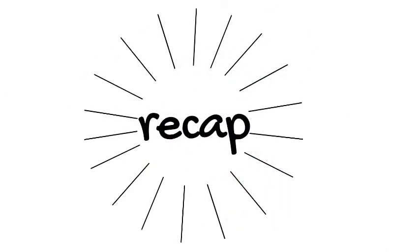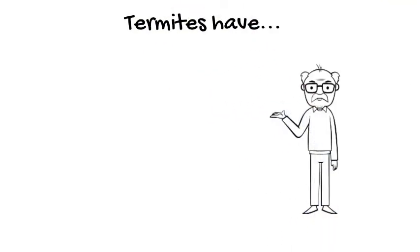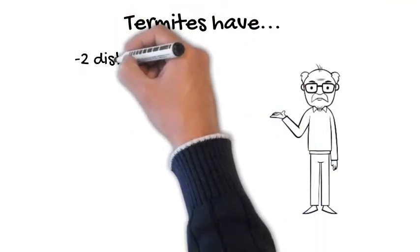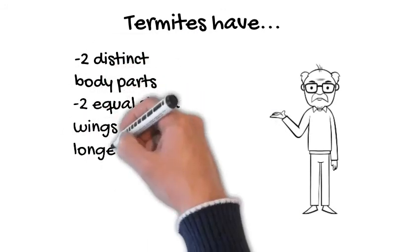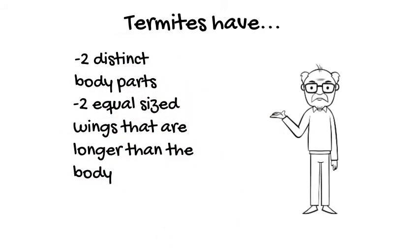To recap, termites have two distinct body parts, two equal sized wings that are longer than the body, and two straight antennae.